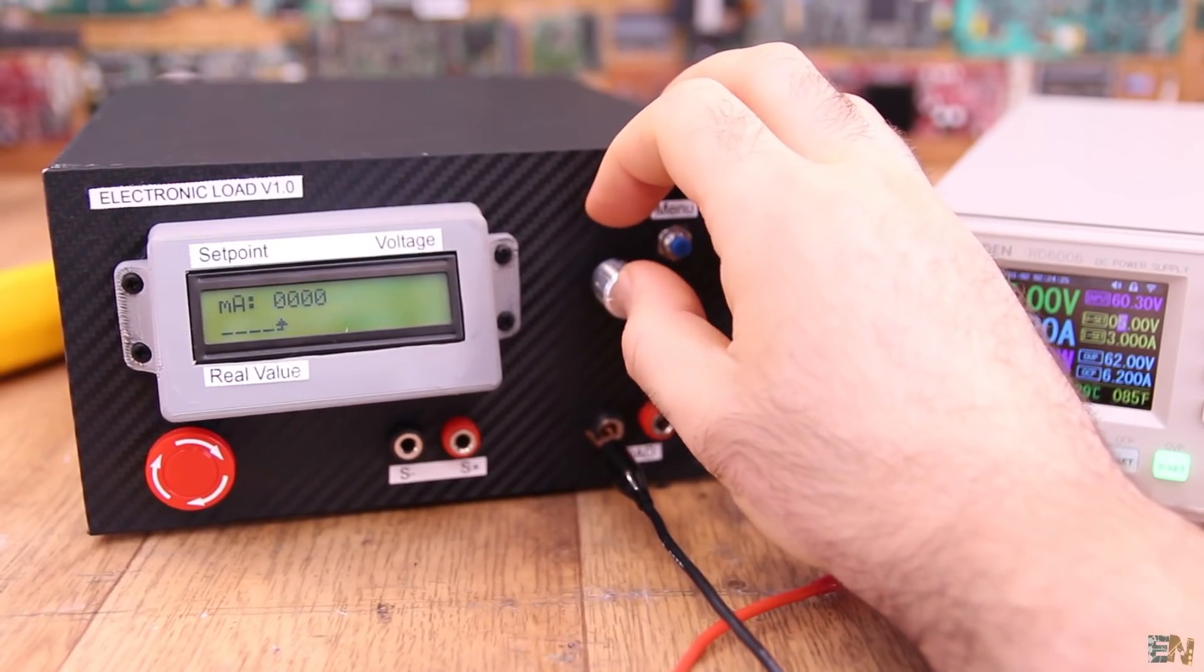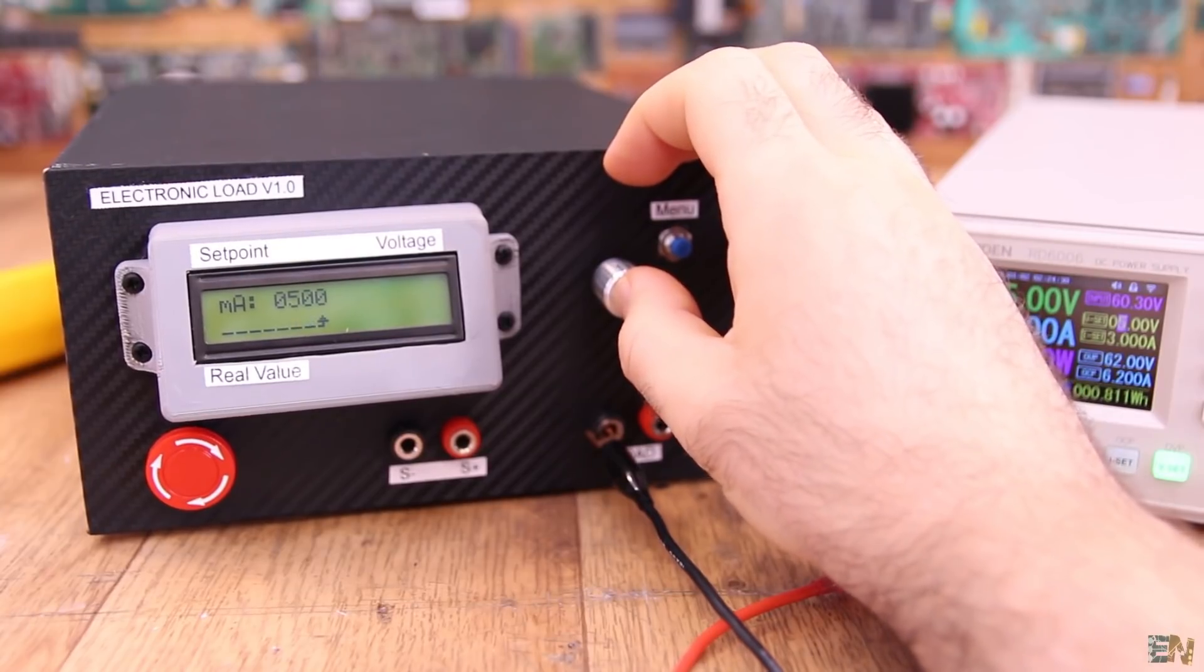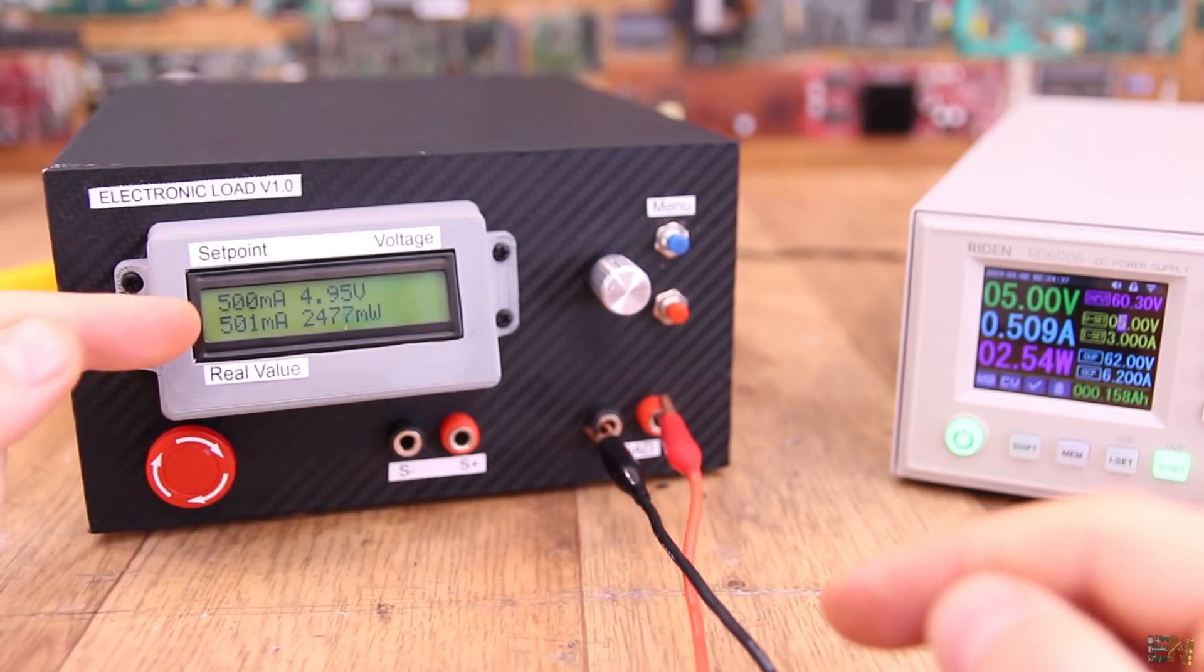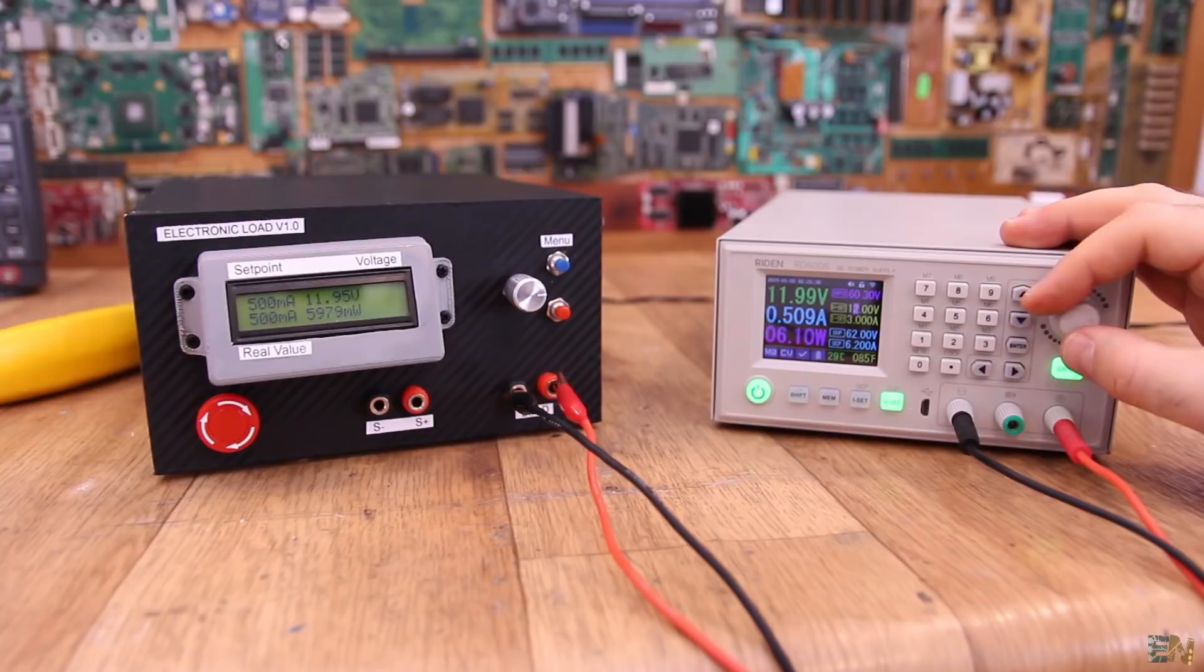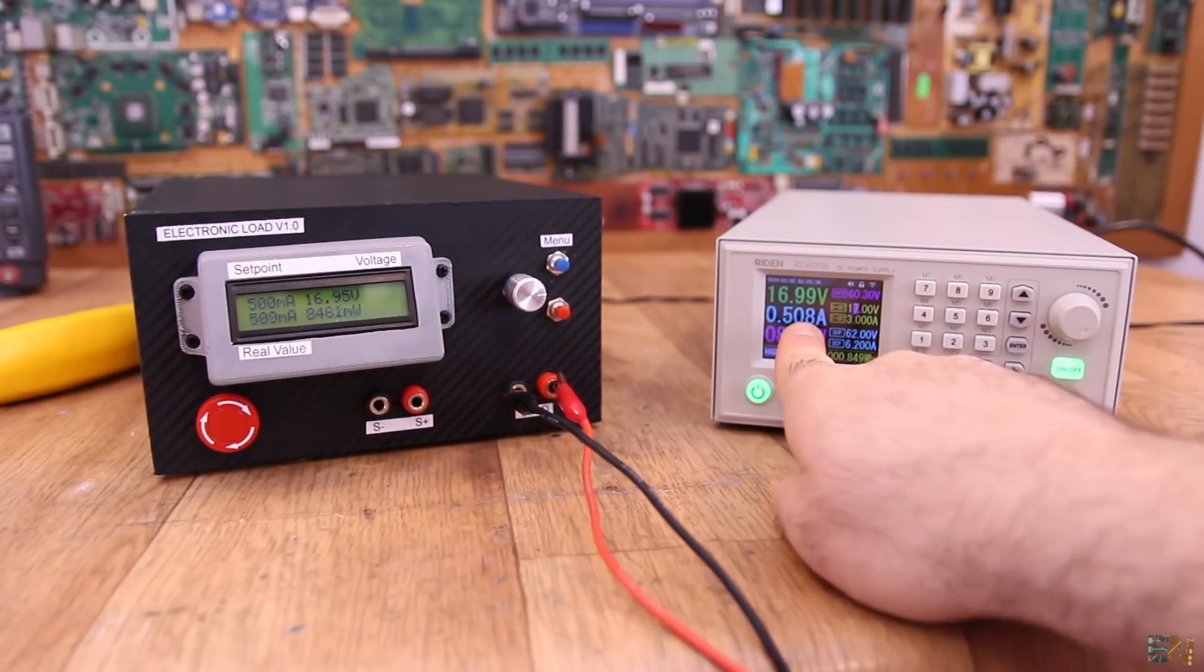So now we go into current mode. Let's set it to 500mA. I connect my power supply and as you can see, we have 500mA current flow. Even if I change the voltage from the supply, the current value stays the same because the load will change automatically in order to keep always 500mA.